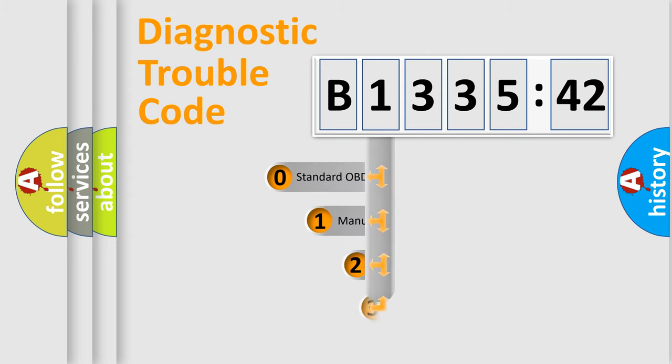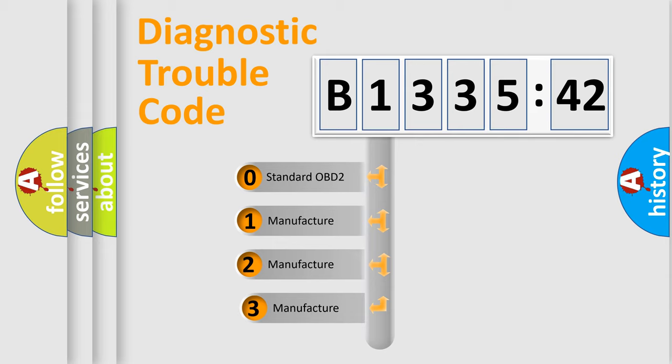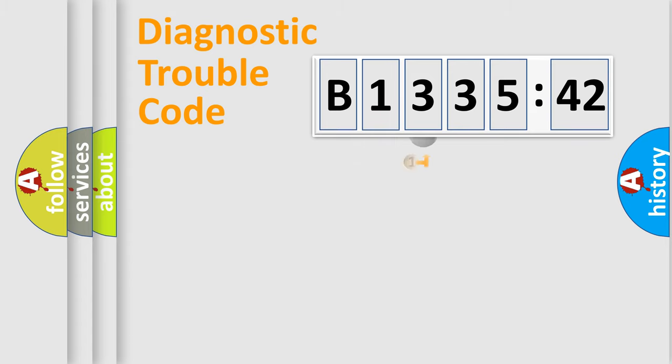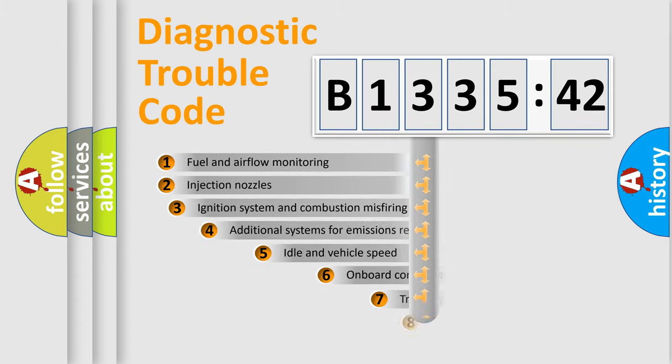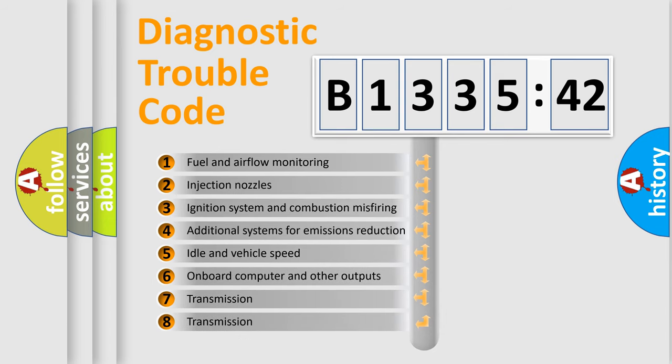Powertrain, Body, Chassis, Network. This distribution is defined in the first character code. If the second character is expressed as zero, it is a standardized error. In the case of numbers 1, 2, 3, it is a more prestigious expression of the car-specific error.